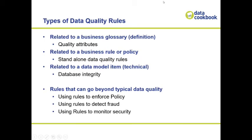The types of rules you're working on are related to your business glossary definitions — these are functional, high-level things we call quality attributes. They can also be general standalone rules related to a business rule or policy that you're not going to tie to a business glossary term, because it's hard to pick just one term. For example, a business rule might be that birth date is required, or that no student enrolled in a particular program is allowed to be below a certain age — something that involves lots of glossary terms.